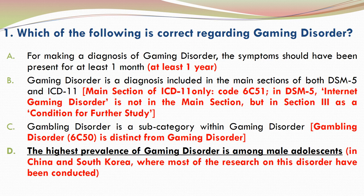A is incorrect because for making a diagnosis of gaming disorder, the symptoms should have been present for at least one year. B is incorrect because gaming disorder is included in the main section of ICD-11 only; in DSM-5, internet gaming disorder is not in the main section but is in Section 3 as a condition for further study. C is incorrect because gambling disorder is distinct from gaming disorder and has its own ICD-11 code. So the correct answer is D.